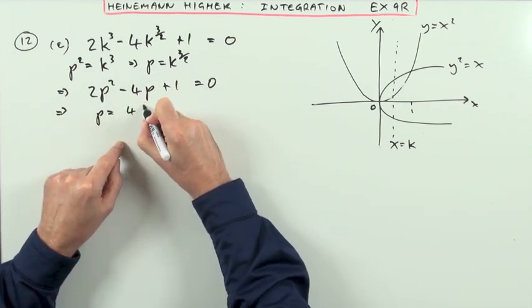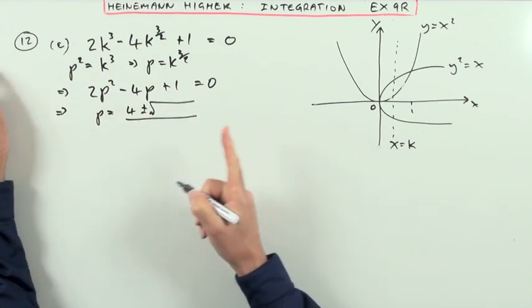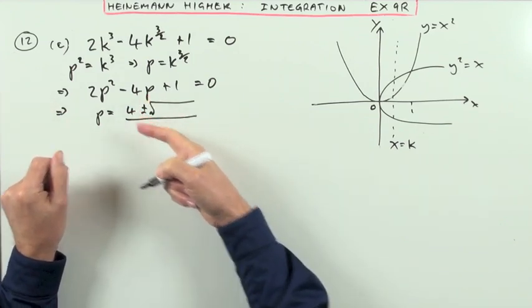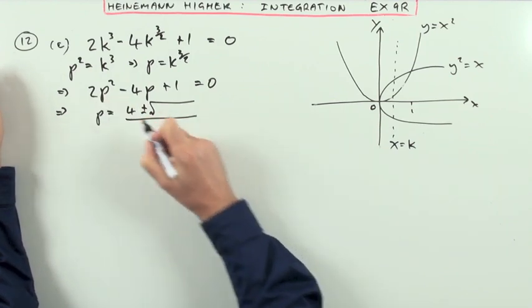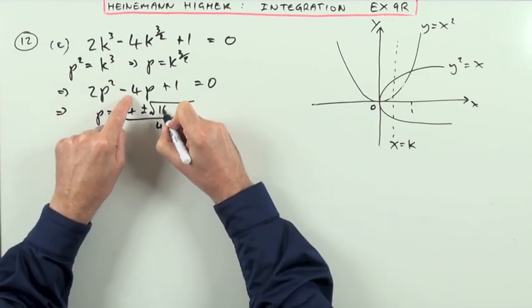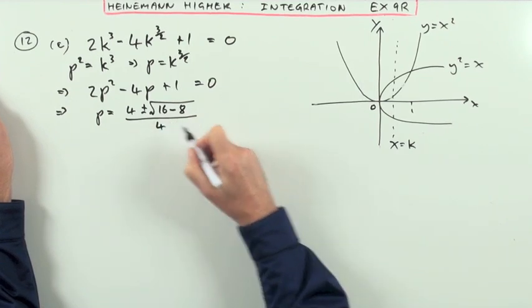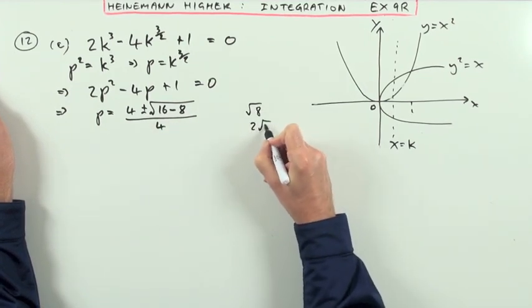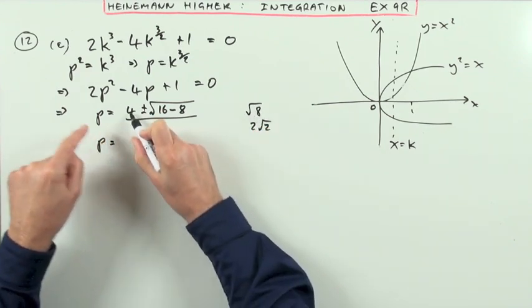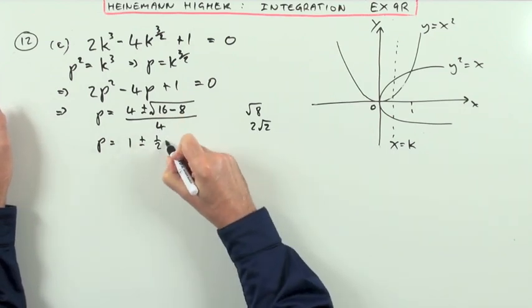So the formula will be p equals the negative of the middle coefficient, the coefficient of p on its own, 4 plus or minus. Now I know I'm looking for a positive value, but in this case I'm not sure straight away whether the minus will be sufficient to knock that 4 down into a negative over twice the product, twice the first one I mean, which is 4. And this part's going to be square the middle, 16, take away 4 times 2 times 1, take away 8. So that's going to be root 8, which is 2 root 2, for 2 is 2 root 2. So what I've actually got for p then is I've got 4 over 4, which is 1, plus or minus 2 over 4, which is a half root 2.